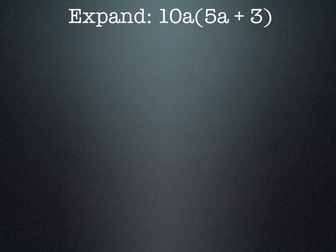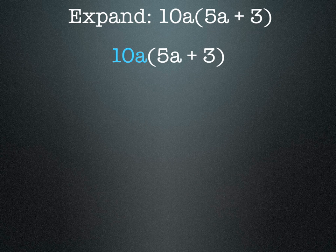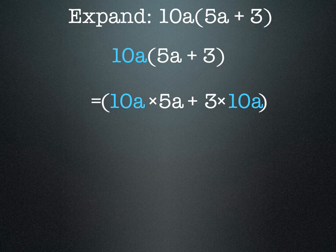If you're asked to expand this one, 10a(5a + 3), then we need to multiply the 10a by the 5a and also by the 3. So what happens is we get 10a × 5a + 3 × 10a.